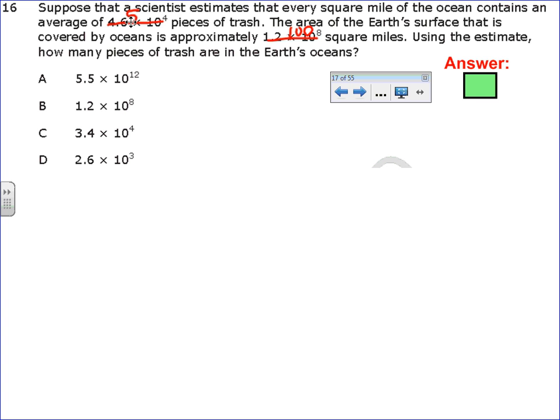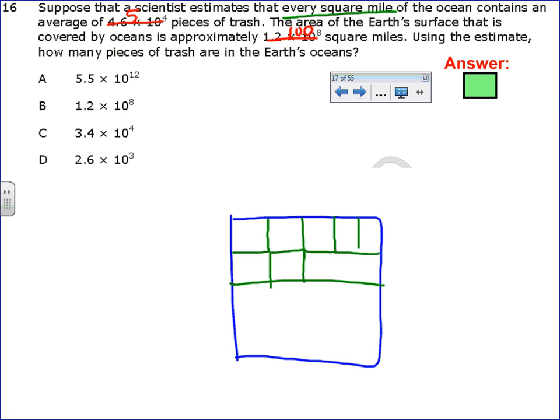So I'm going to read it again. The scientists suppose that every square mile of the ocean, I'm going to go ahead and just draw me a little picture. We know the ocean's not square, but just for this problem, let's just pretend this is the ocean. And that every one square mile, every square mile, so if you made it into a bunch of squares, these are obviously not equal.